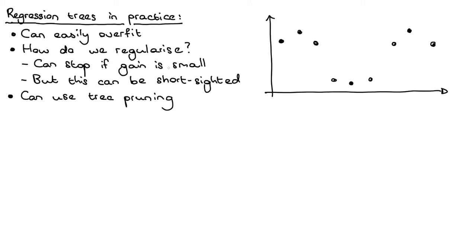Like with any other machine learning model, we need to know how to regularize regression trees. One way to do this is to say we will only split a leaf node if the gain — the improvement in the loss — is large enough. So only if it really benefits us will we split. That sounds like a sensible strategy but it can also be problematic.